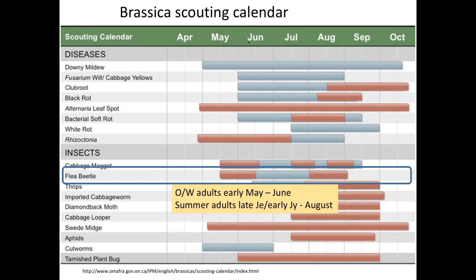This Nebraska scouting calendar based on Ontario data gives an indication of when flea beetle problems are present and most serious. We see overwintering adults sometimes in early May, usually a little later, extending into June. Summer adults come on often in late June and early July, and adults can continue to be a problem through August. There may even be a partial additional late summer generation, though we don't have really good information on how much that occurs or how serious it is.